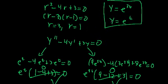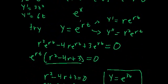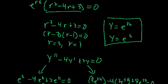If you watched the last video, you should note that these two solutions are linearly independent — we can't scale one of these solutions to make it equal the other for all values of t. So we've found two linearly independent solutions to this second-order differential equation.